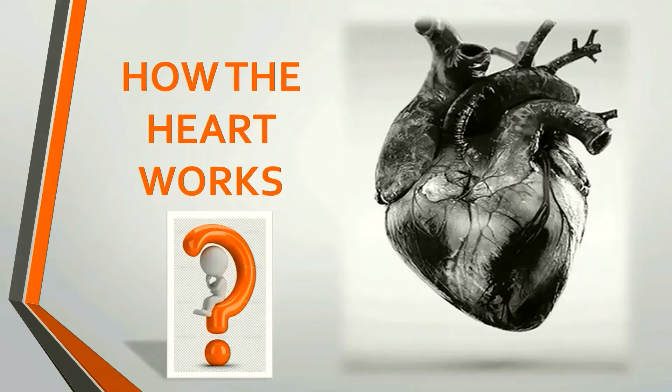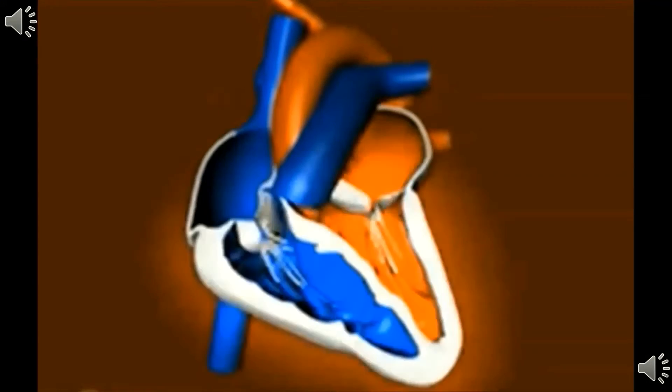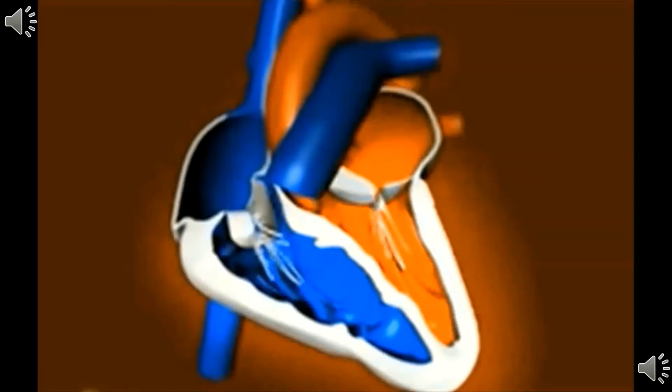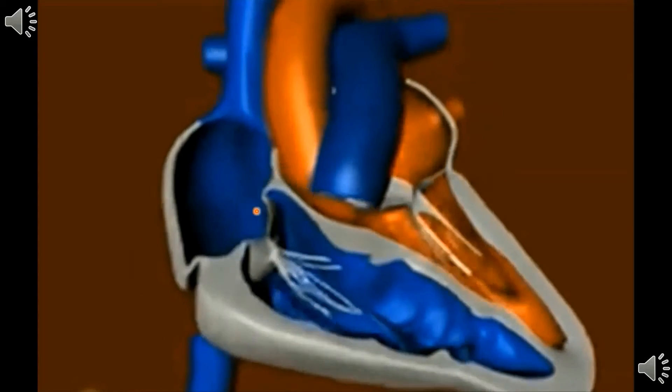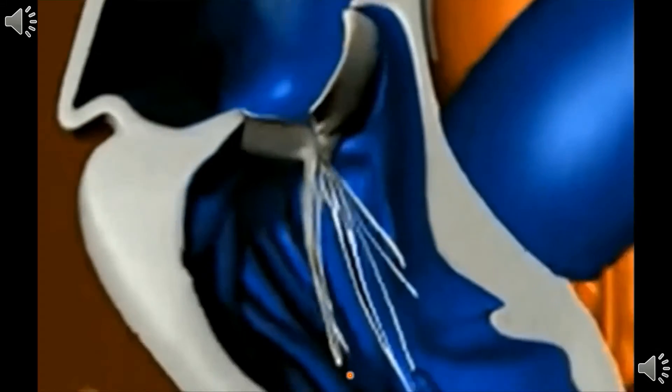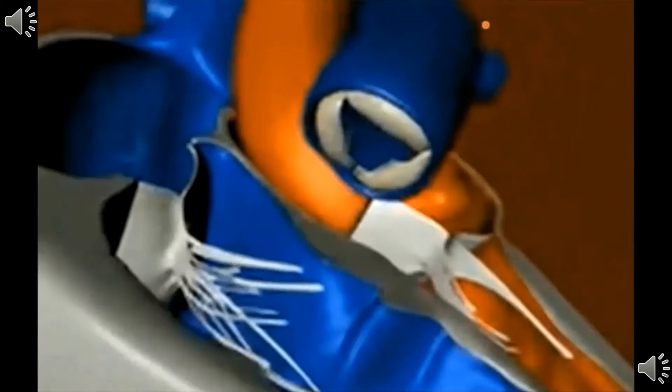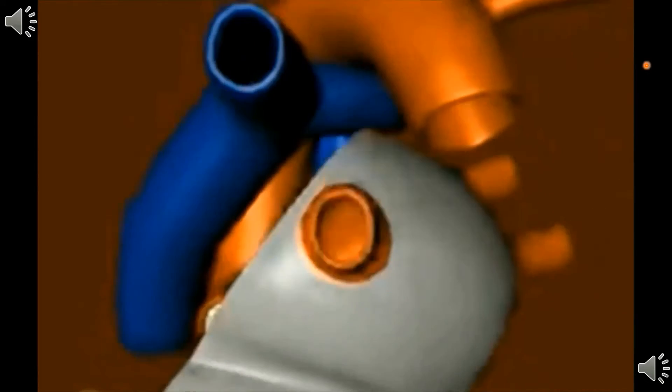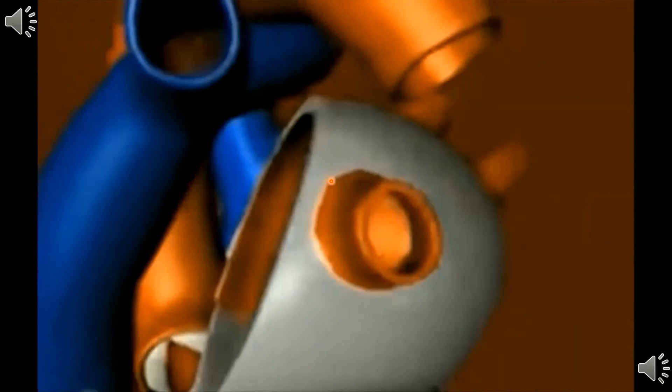Now we see how the heart works. Deoxygenated blood fills into the right atrium by the inferior and superior venae cavae. At the same time, oxygenated blood fills into the left atrium by pulmonary veins. After filling the right and left atria, that blood transfers into the right and left ventricles through the valves. Due to the contraction and relaxing of ventricle walls, blood flows out to the aorta and pulmonary artery respectively.